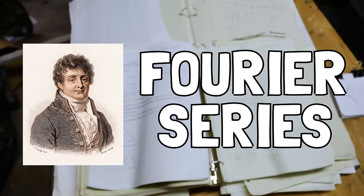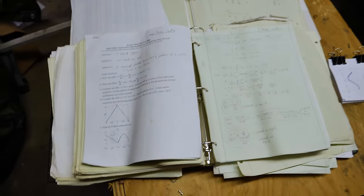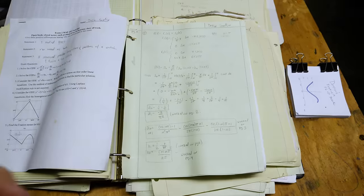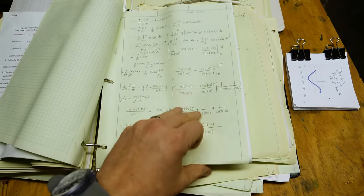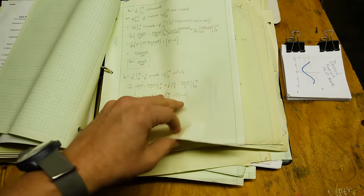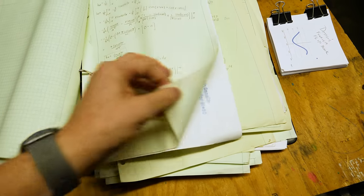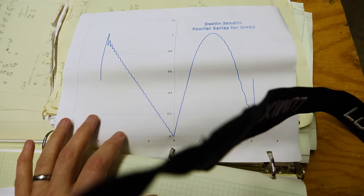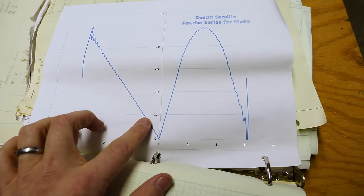There's some fancy math I learned at the university called the Fourier series. These are my old notebooks. And check this out. The teacher challenged us to create this graph by doing nothing but adding together curves. And I found where I did it. It's right here. And it took me four or five pages. Yeah, it took a lot of pages. And I ended up with this. I was able to make the graph by adding together a bunch of waves.